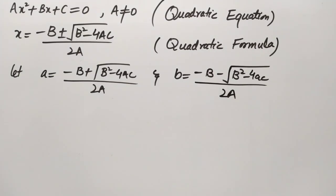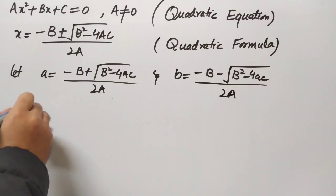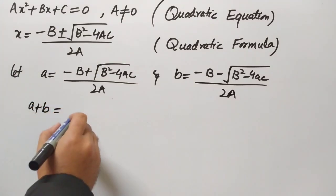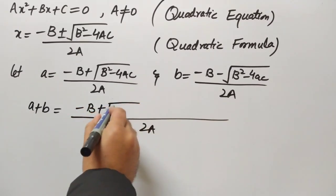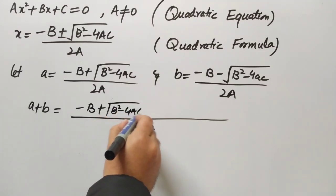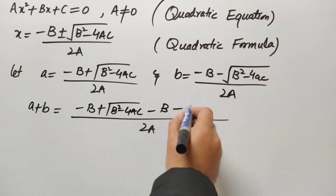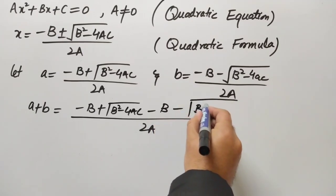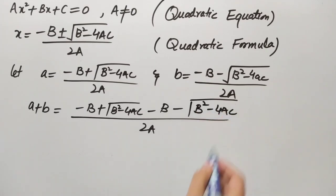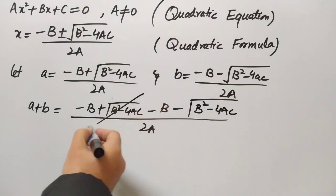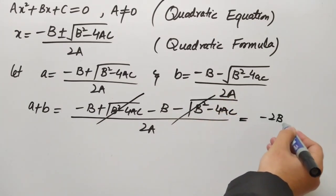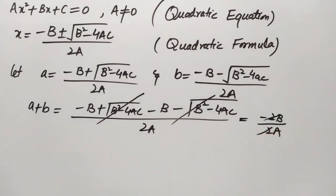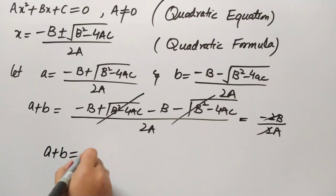Now we will add these roots, α plus β, and simplify. So α + β = [(−b + √(b² − 4ac)) + (−b − √(b² − 4ac))] / 2a. The square root terms cancel each other out, so α + β = −2b / 2a. We cancel the 2, and the answer is α + β = −b/a.